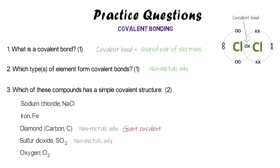Sulfur dioxide has only three atoms and it's covalent, so that's simple covalent. Oxygen, O2, is covalent because oxygen is a non-metal, and because there are only two atoms in the molecule it's going to be simple covalent.